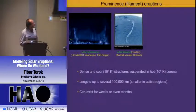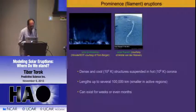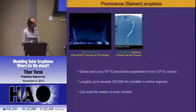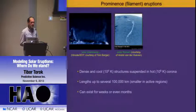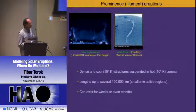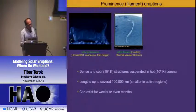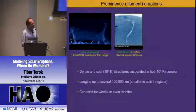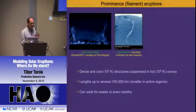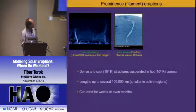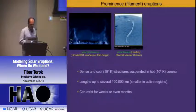Next are prominence eruptions. Prominences, as you know, are dense and cool, elongated structures held by magnetic fields in the much hotter corona. They can reach lengths of up to half a solar radius, and in active regions those are smaller, but essentially they are the same things.